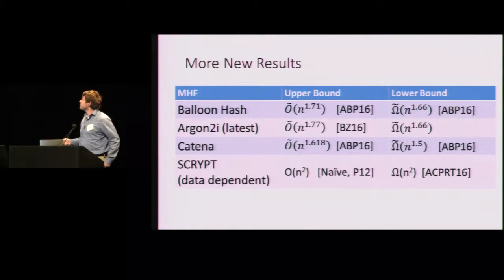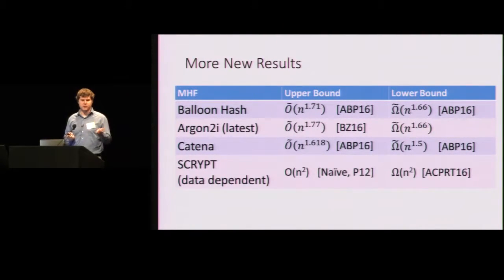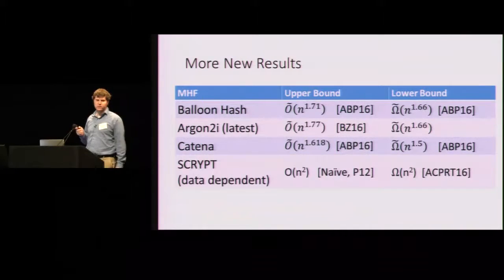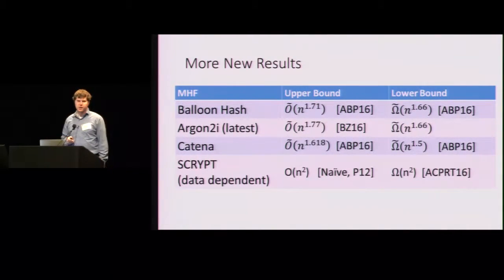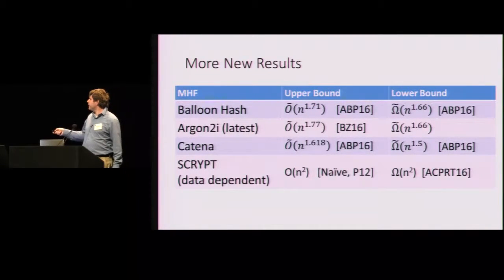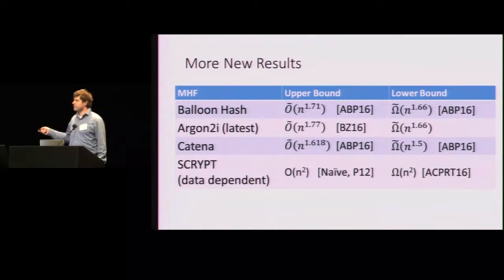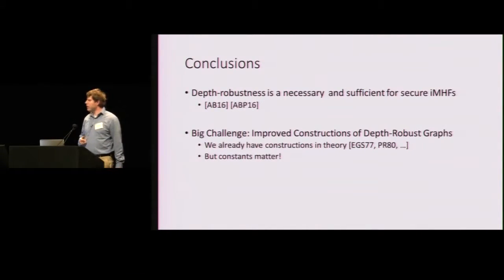Some other new results. So with this new technique, we can not only upper bound the complexity of computing these IMHFs, we can also provide some lower bounds. So in particular, for the latest version of Argon2i, there's a lower bound. The cumulative complexity is at least n to the 1.66. Similarly for balloon hashing. S-crypt, we're going to hear about next lecture. It actually has a lower bound of n squared. So that's exciting. But of course, S-crypt is data dependent. That's why our upper bounds don't apply.